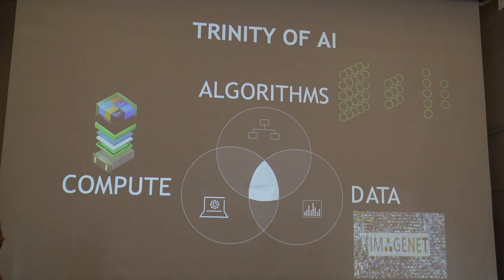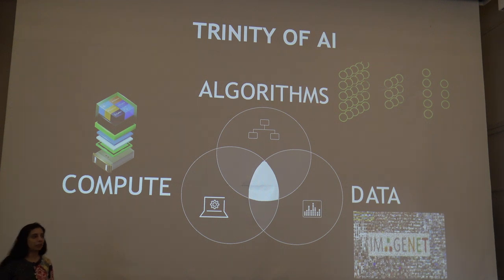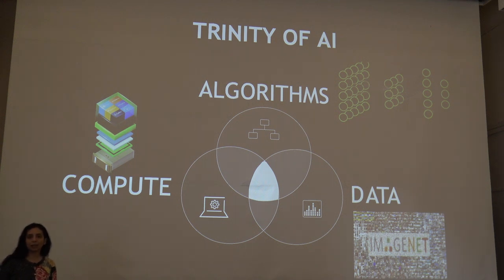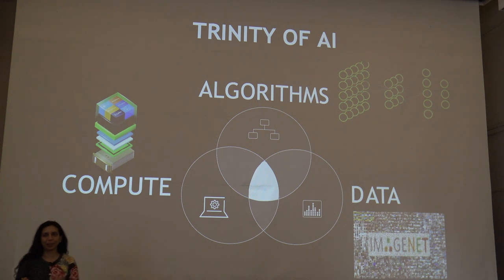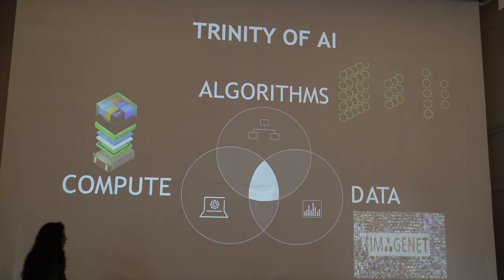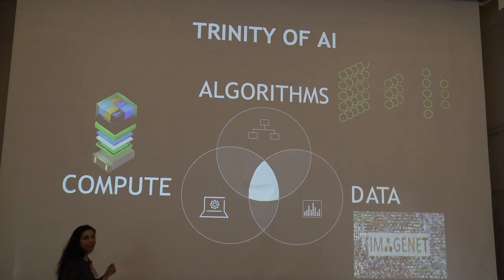The third facet is also important: what kind of compute infrastructure do I have? With data growing in enormous amounts and models getting bigger, how do we parallelize computation, scale them up, and use the right programming frameworks to get models into production easily and quickly? These aspects are more common in industry but are now coming into academia as well, because we are grappling with large-scale computation. It's important to take all three — algorithms, data, and compute — together in an integrated fashion.